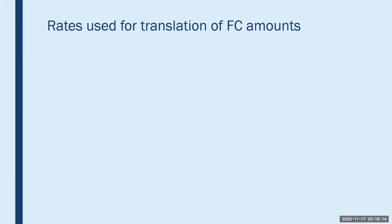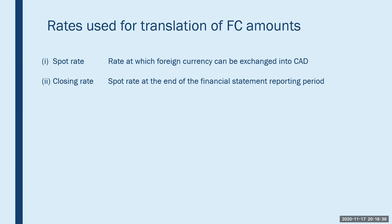The rates that should be used to translate the foreign currency amounts — there can be a bunch of different rates to pick from, starting with the spot rate. This is the most commonly used rate; it's the rate at which the foreign currency can be exchanged into Canadian dollars if the exchange were to take place immediately. We could also use the closing rate, which is basically the spot rate at the end of the financial statement reporting period.